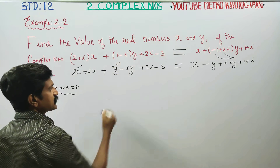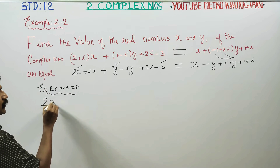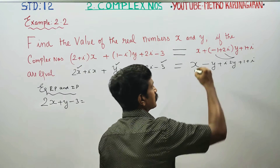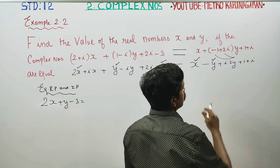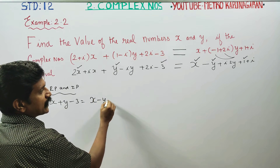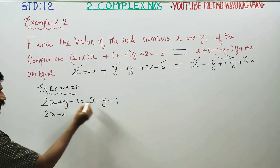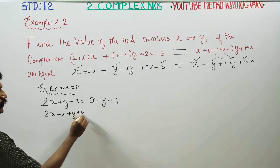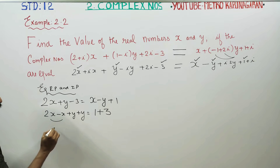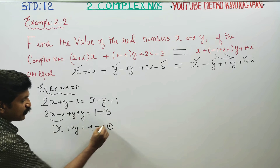Looking at the real parts on both sides: collecting the real part terms gives x minus y plus 1, equated with y. Then 2y, and 1 plus 3 is 4. So your Equation 1 is x plus 2y equals 4.